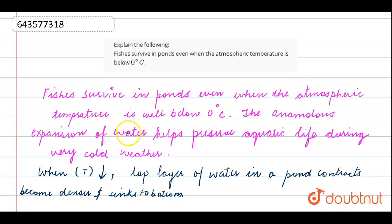The anomalous expansion of water helps preserve aquatic life during very cold weather. We protect the fishes, like all aquatic animals, from the cold weather through this anomalous expansion of water during very cold weather.